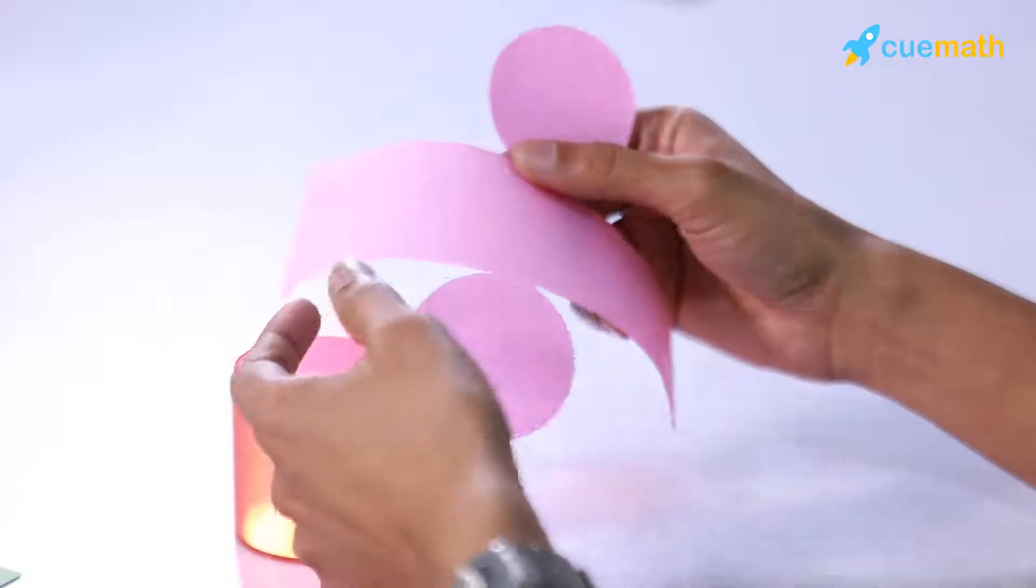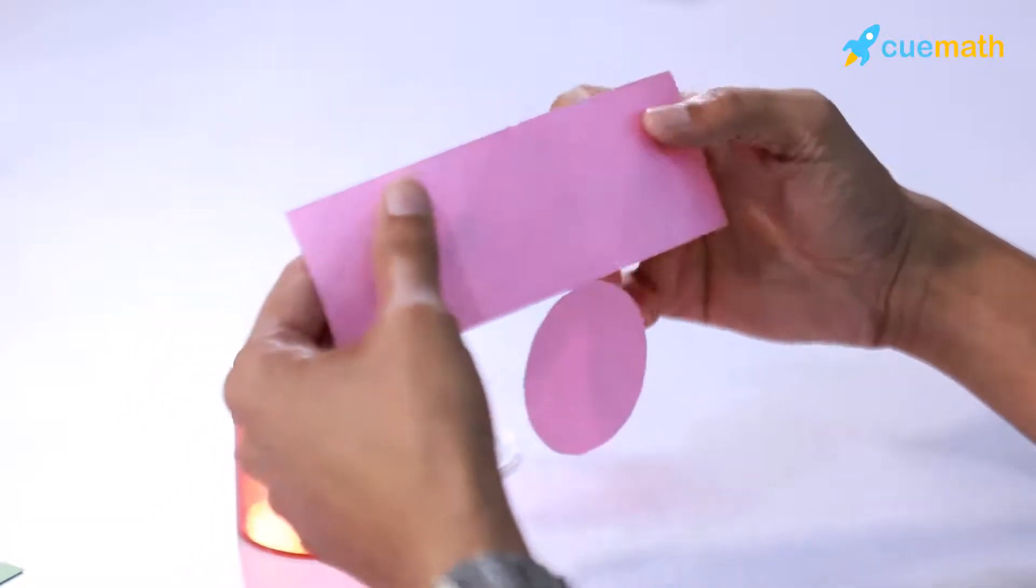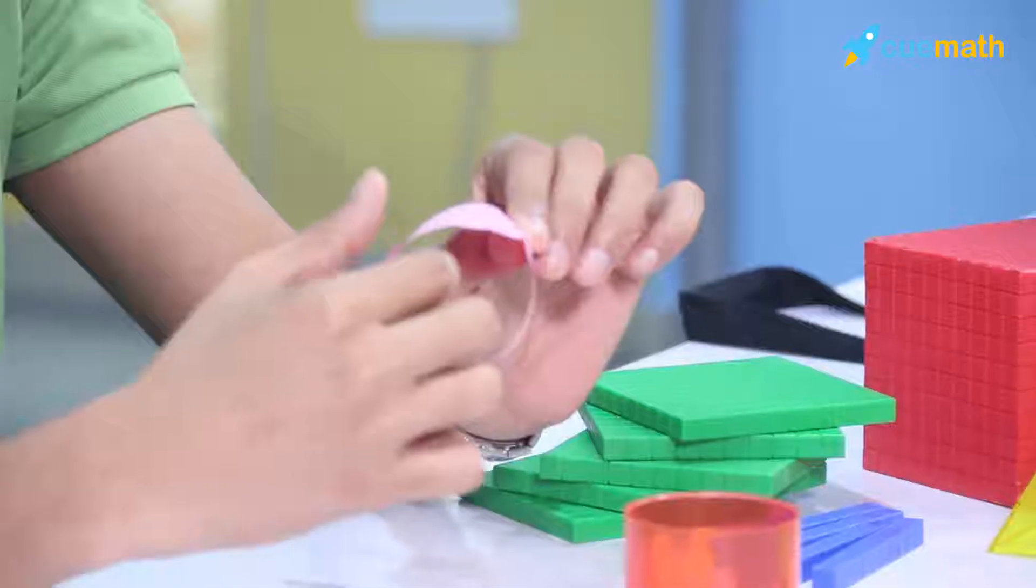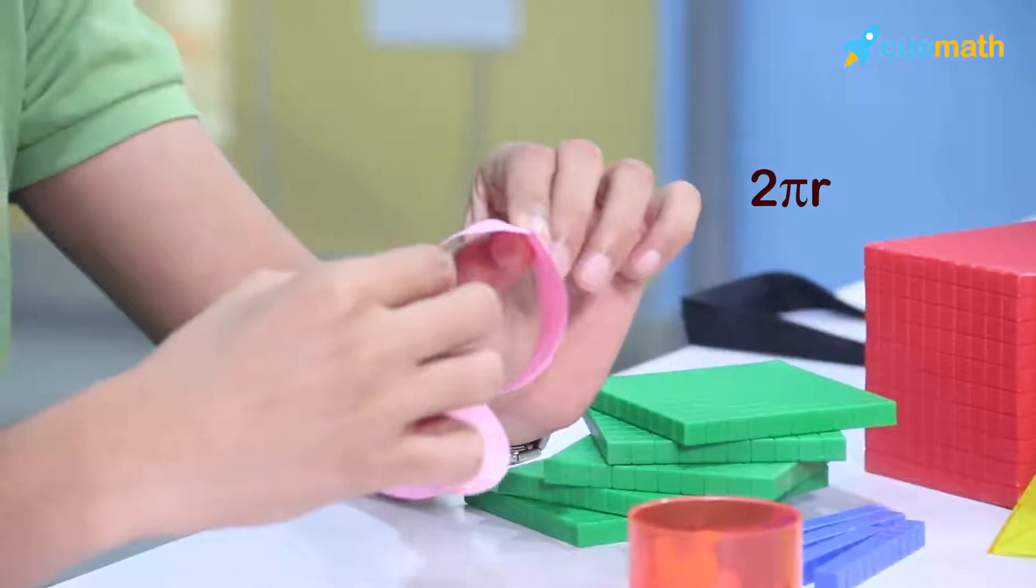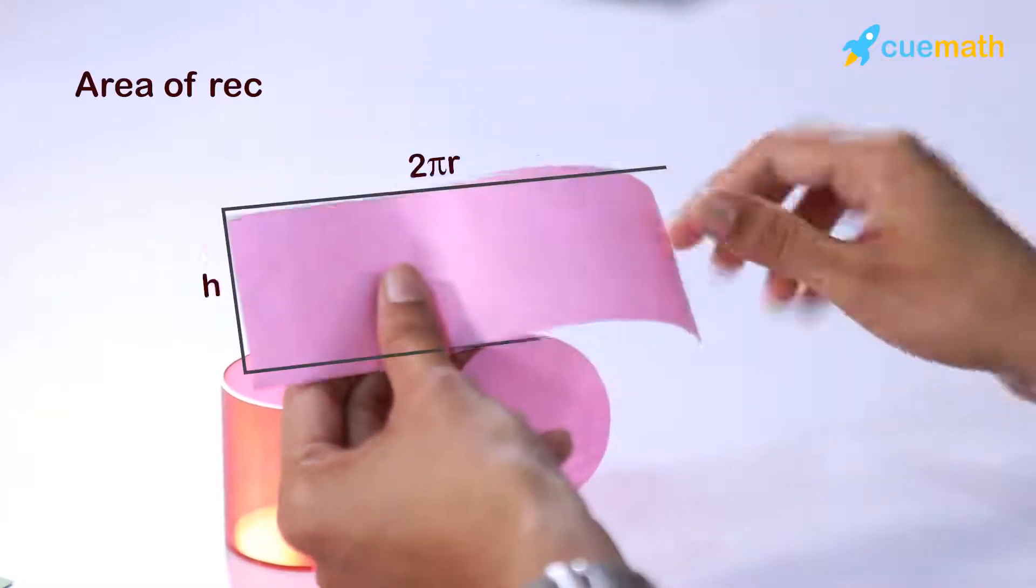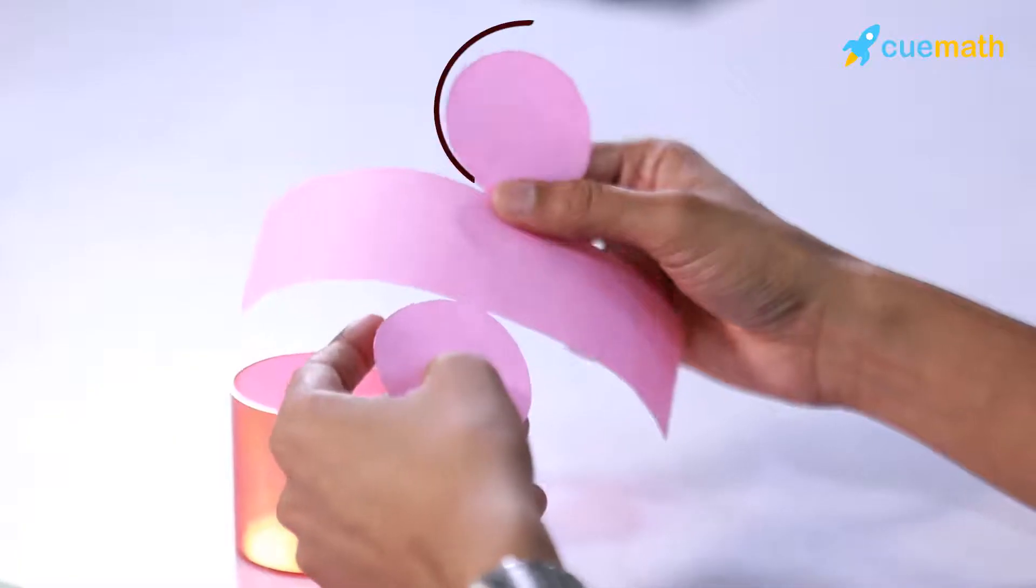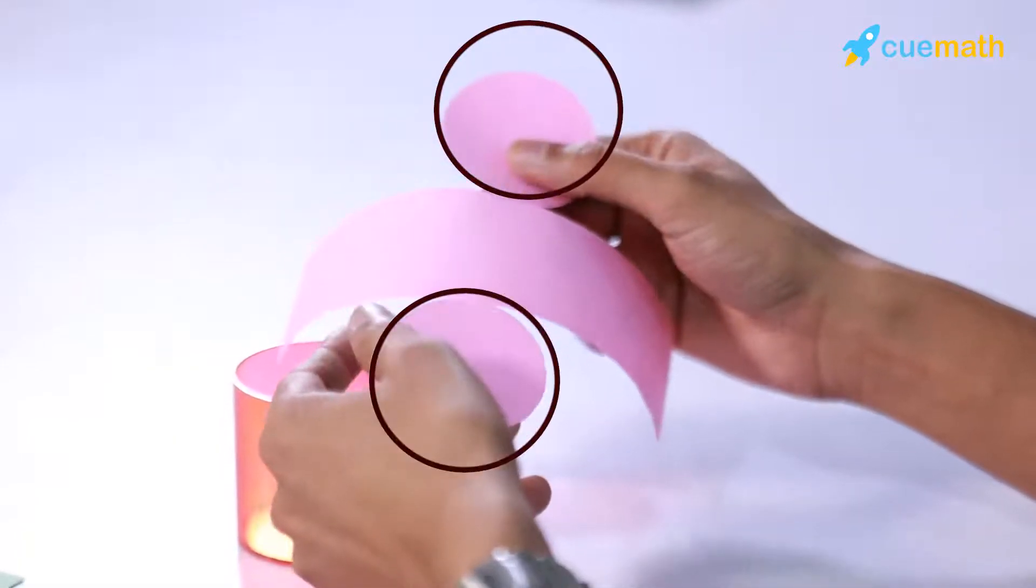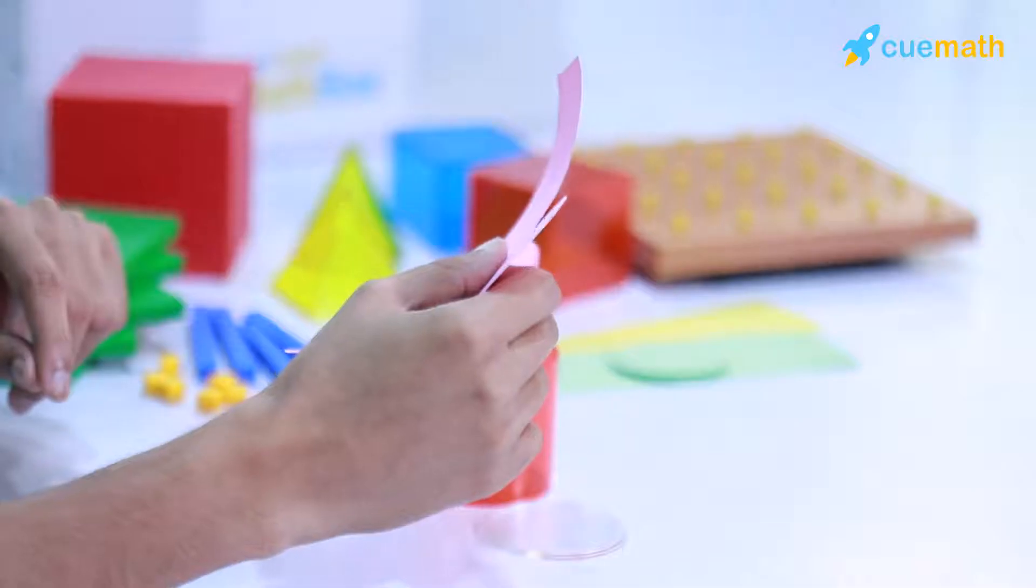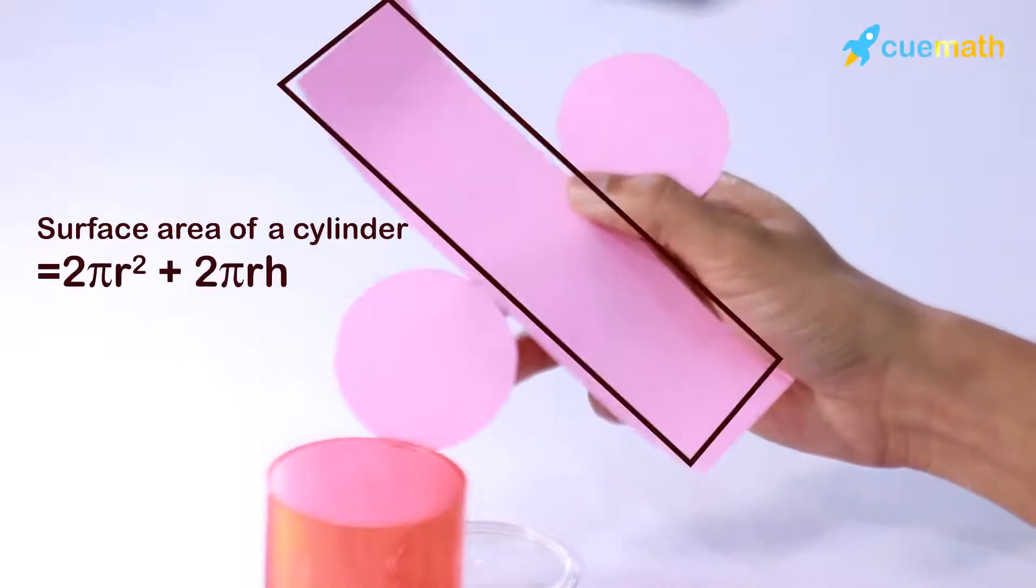As you can see that the length of this rectangle was simply the circumference of the circle that forms the top and bottom parts of the cylinder, so that's simply 2πr, and the breadth is the height of the cylinder, which is h. So the area of the rectangle is 2πrh. Add that to the two circles which are simply the top and bottom faces of the cylinder, which is πr² and another πr². So the surface area of the cylinder is 2πr² + 2πrh, or 2πr(r+h).